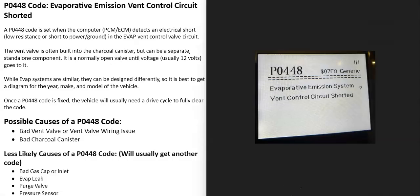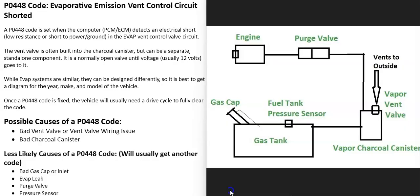Today I'm talking about a P0448 code - what it is and how you could go about fixing it. A P0448 code is an evaporative emission vent control circuit shorted. Basically, vehicles have what's called an EVAP system that takes all the gas vapors from the gas tank and feeds them up to the engine to be burnt away so they don't escape into the atmosphere. When you get this P0448 code, the computer is seeing a problem with a component inside this EVAP system.